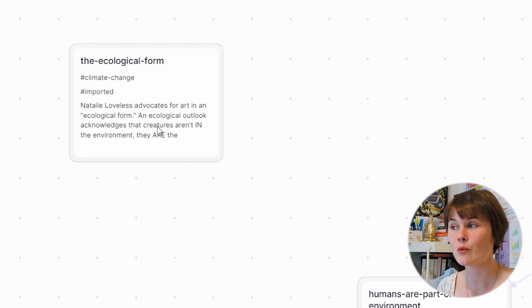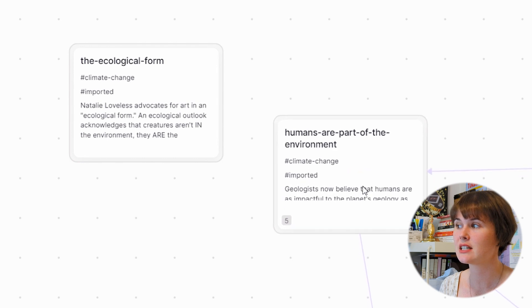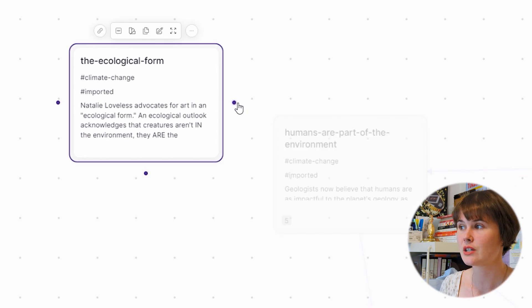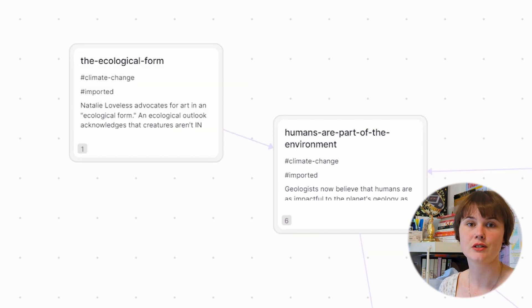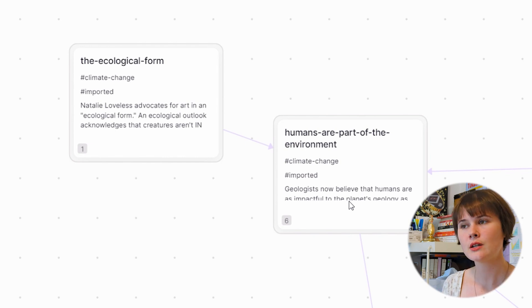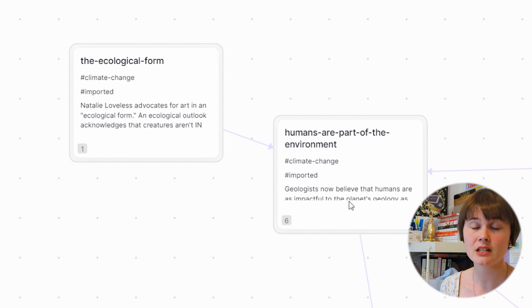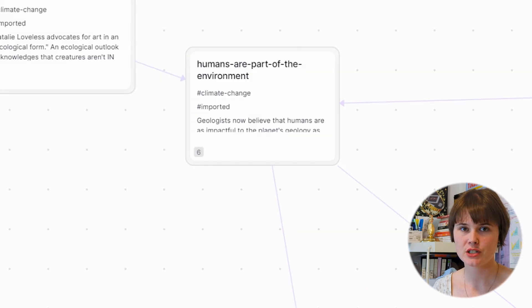It's brainstorming without any of the actual work of brainstorming — you've already done all of the thinking, and Scrintle does the work of organizing that thinking into a page for you. I could also use this mind map as a thinking tool to ask myself what is disconnected. This idea about 'the ecological form' currently has no connections, and I don't even remember what that note is about, so maybe that's something I want to go and tackle in my note-taking session.